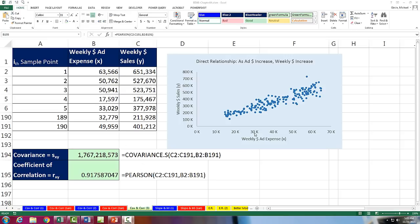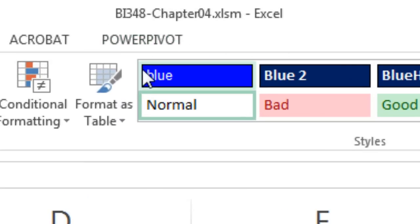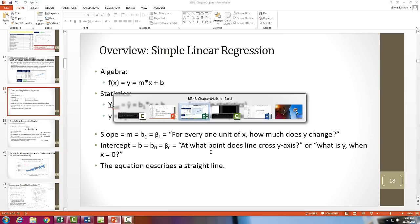Welcome to Highline BI class video number 46. If you want to download this workbook, BI 348, Chapter 4, this is the Excel workbook, or you can download the PowerPoints, click on the link below the video.